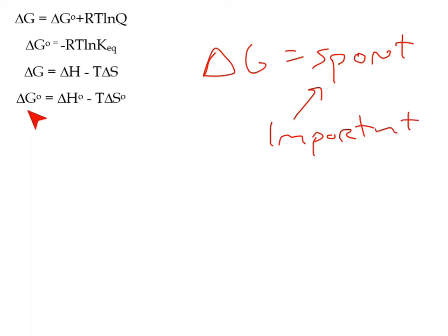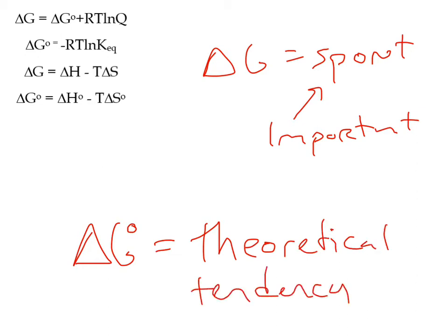Delta G naught is another concept altogether. It's kind of about spontaneity, but remember that delta G naught is theoretical. It's a theoretical tendency of the reaction. Should the reaction want to go one way or the other? So I like to think about, am I the kind of person who would like to sleep in on the weekend? That would be my delta G naught. Yeah, I have a theoretical tendency that I would like to sleep in on the weekend. But maybe I have to do some studying or maybe I have a meeting in the morning. And so real life is going to come in and say, my theoretical tendency is overridden, and that's going to give me my actual delta G.